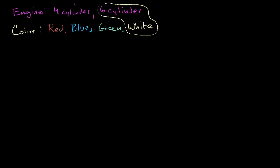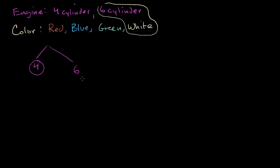Well, one way to think about this is: what are all of the equally likely possible outcomes, and then which of those match a six-cylinder white car? First we could think about the engine decision. You're either going to get a four-cylinder engine or you're going to get a six-cylinder engine.